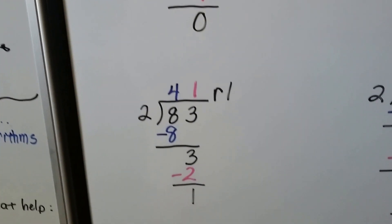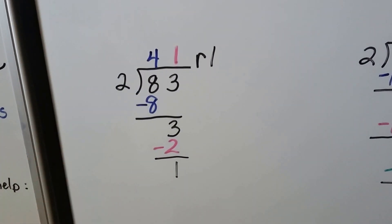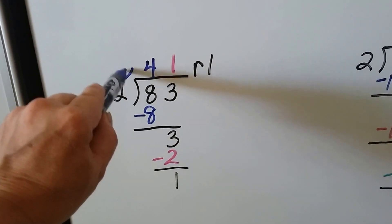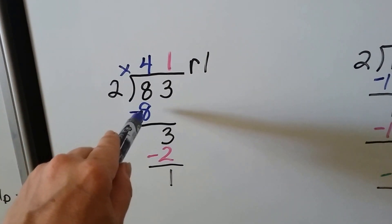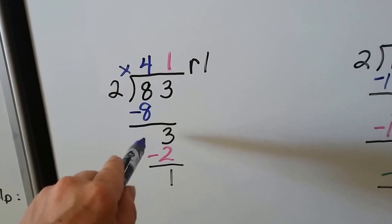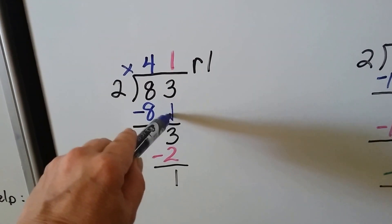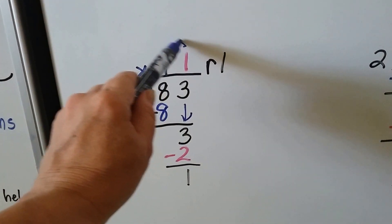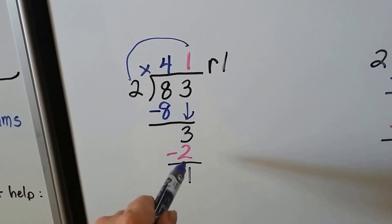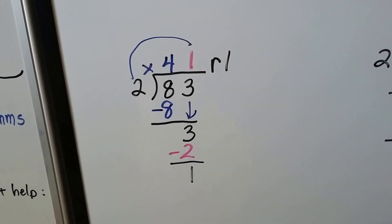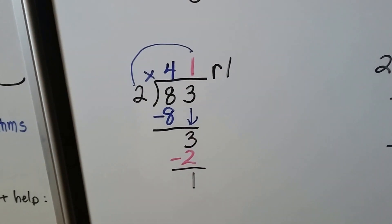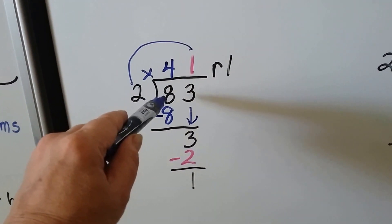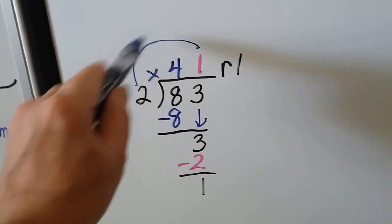Let's take it another step. Now we're going to see how many times 2 can fit into 83. We know it goes into the 8 four times, and we do 2 times 4, get our 8, and subtract it to get 0. Now it's the 3's turn to come down. 2 goes into 3 one time. 2 times 1 is 2. We subtract it and have 1 left over, so we have remainder 1. Once we figure out how many times it can fit into that number, we multiply and subtract.